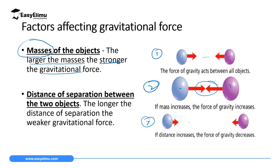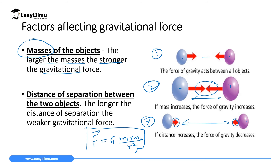The second factor is the distance of separation between the two bodies. When the distance of separation is large, the force is very weak. When the distance is small, the gravitational force is strong. As you advance in your studies, you will learn that gravitational force is calculated as a gravitational constant times mass 1 times mass 2, divided by the distance squared. As mass increases, force increases; but as distance increases, force decreases — an inverse proportion.